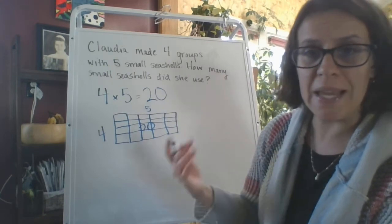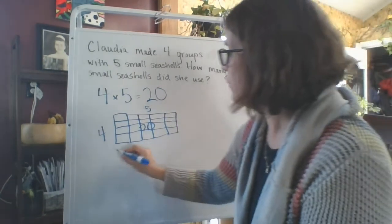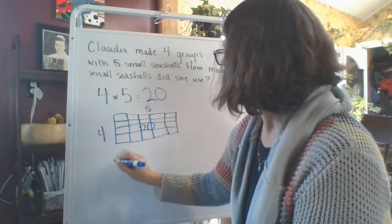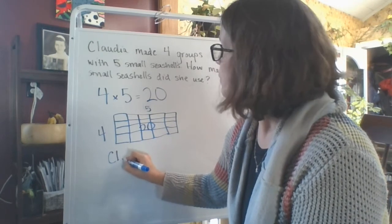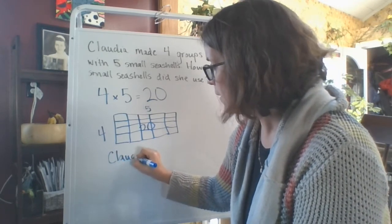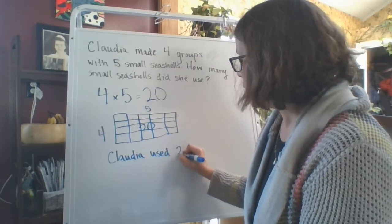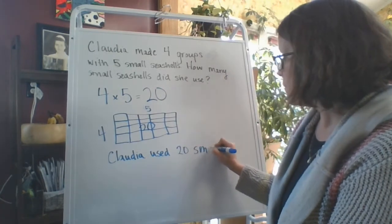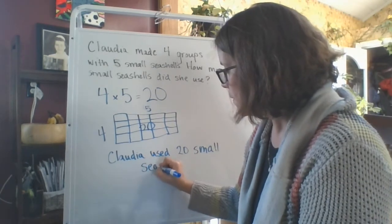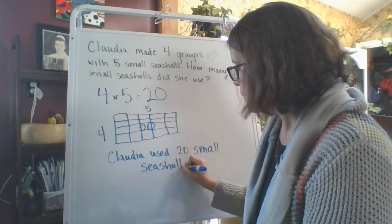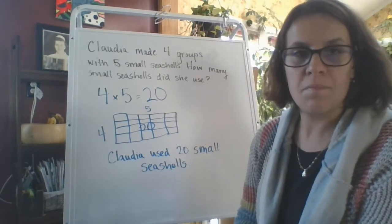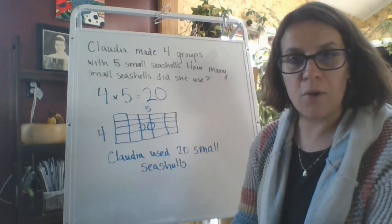If I was going to write my answer, I would put Claudia, or she is fine, used 20 small seashells. Easy enough, right?